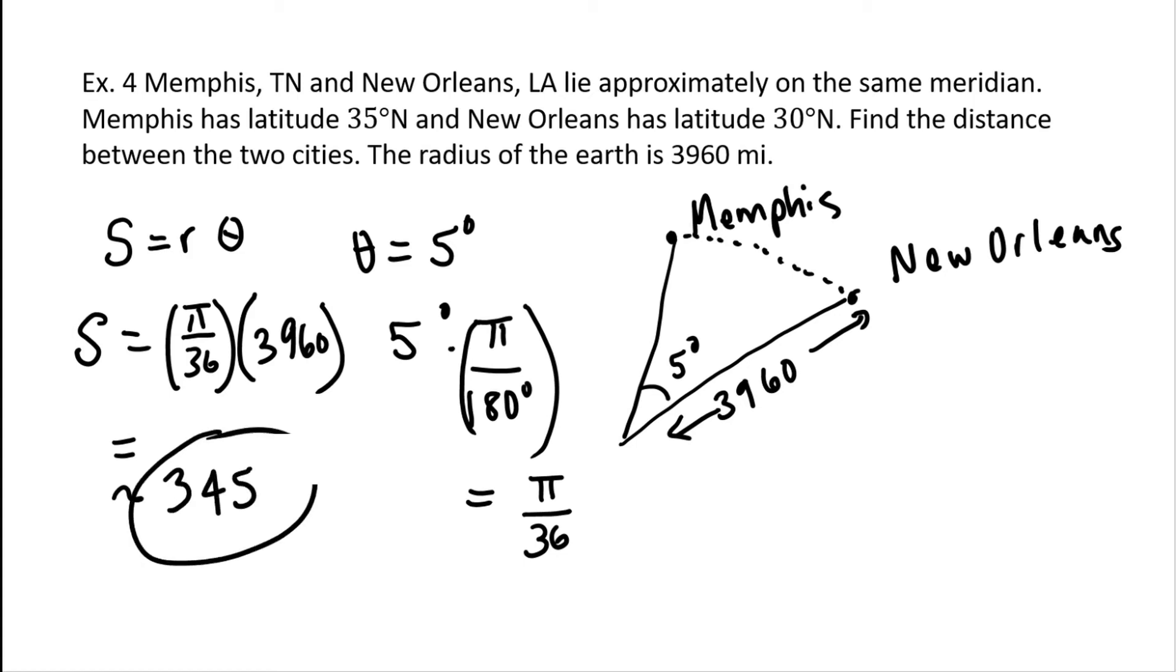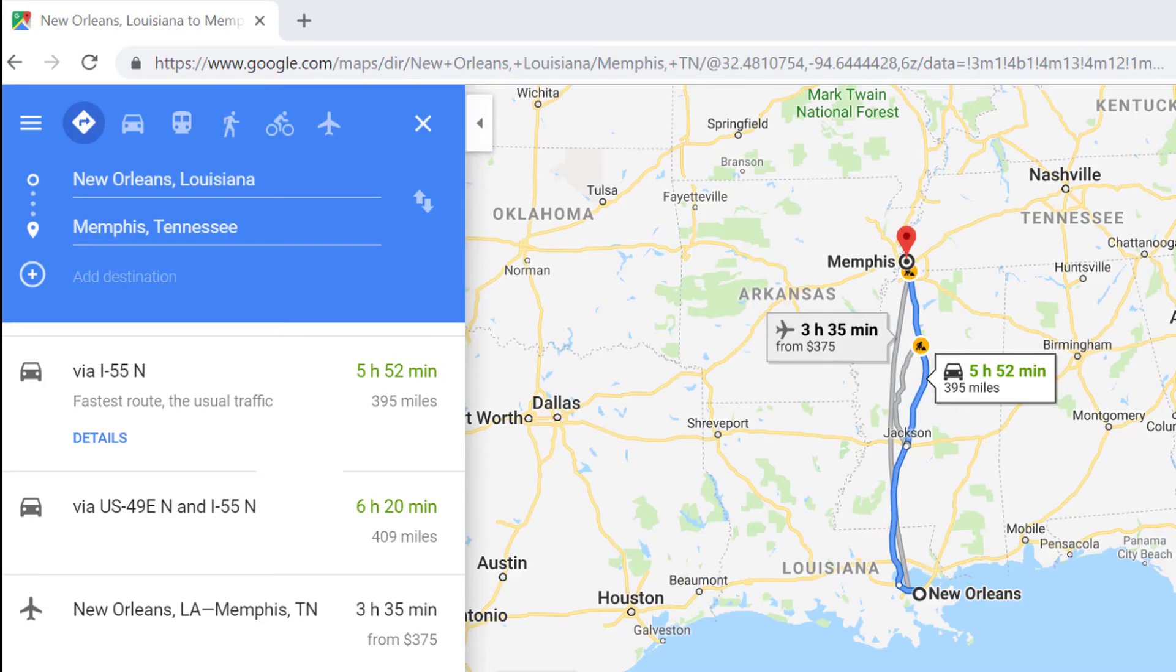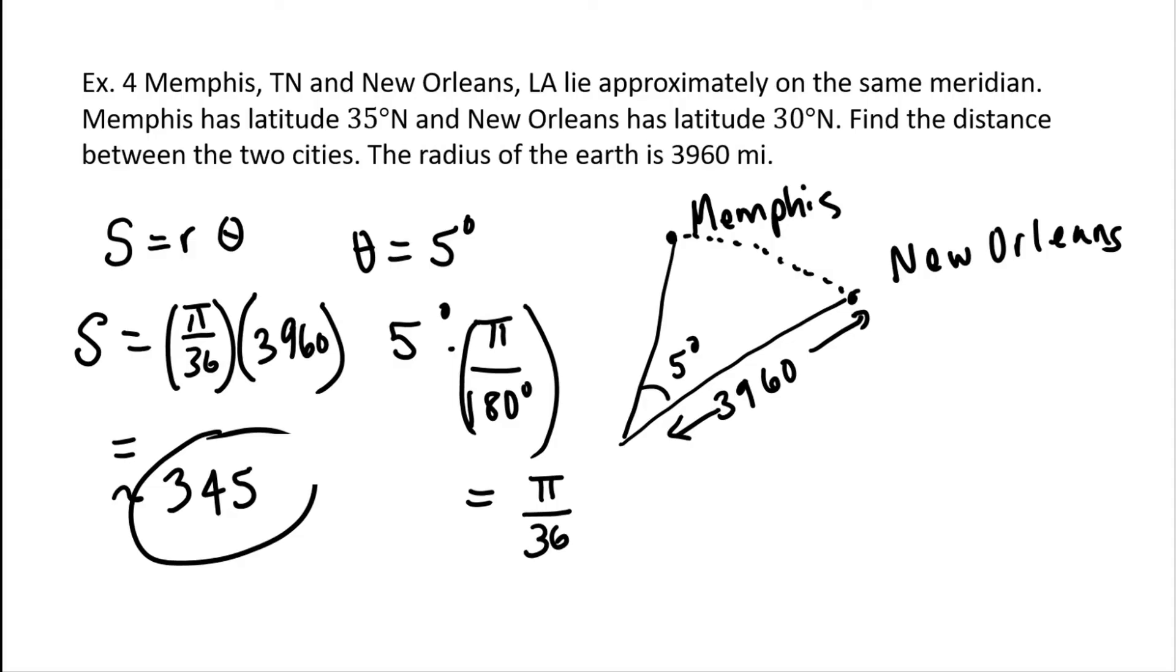I got a little curious and decided to do a Google map search. And in doing that, I got three different distances and quite a few different times for travel. 395 miles, 409 miles, and compared it with the 345 miles we computed. Think about this for a moment. Why are the values different, and how can both Google maps and our computations be correct?